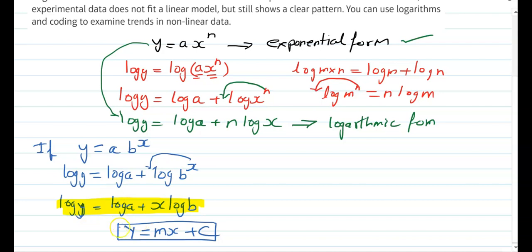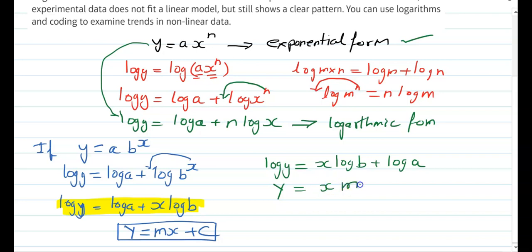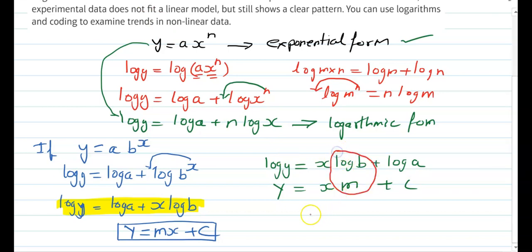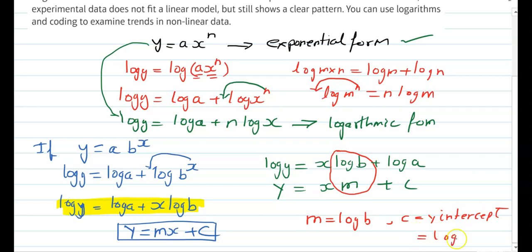Comparing with y = mx + c, our gradient m will be log b, and c, which is the y-intercept, will be equal to log a. So the equation of a line in this form will have log y on the y-axis and x on the x-axis.